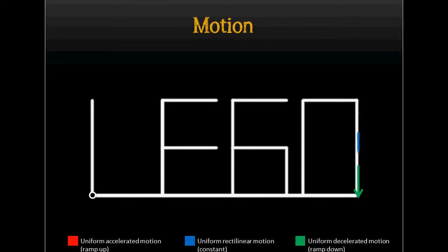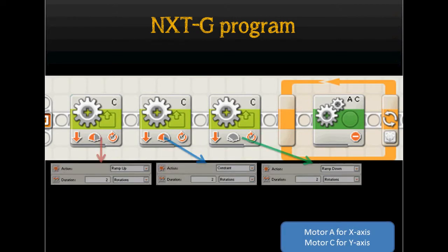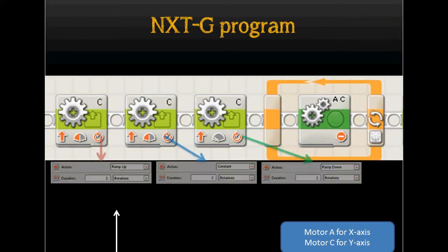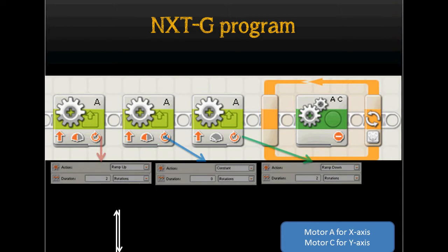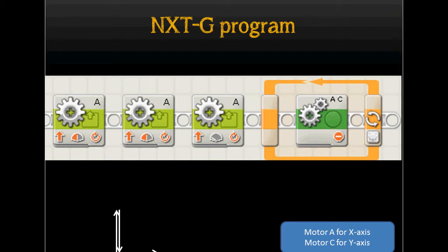After that, we are going to input every number of rotations into the NXT-G program. This is the NXT-G program for making the letter N. As you can see, there are 3 blocks of driver for Motor C. Block number 1 contains dual rotation ramp up, block number 2 contains dual rotation constant, and block number 3 contains dual rotation ramp down. The same structure applies for the next segment, but the direction of Motor C is opposite from before. If you want the complete program, you can download it from the link in the description.